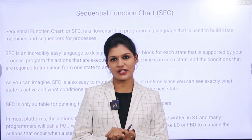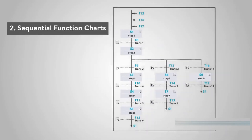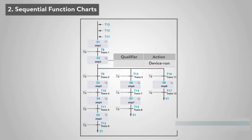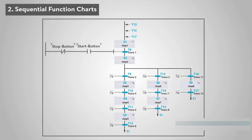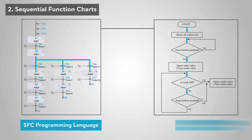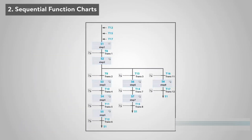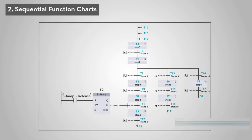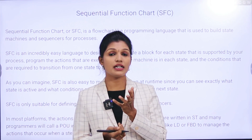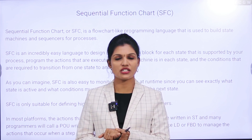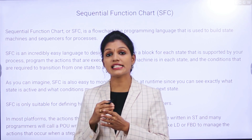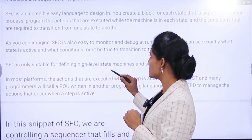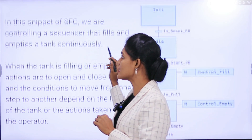The next type of PLC programming language is the Sequential Function Chart, or SFC. It is a flowchart-like programming language used to build state machines and sequences for processing. You create separate blocks for each action, assign what the machine should do in each state, and assign transition conditions required to move from one state to another. SFC is mainly used for high-definition missions and sequences, since it is easy to monitor and debug.